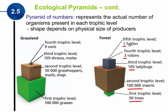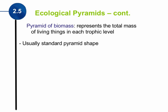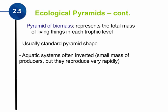The third type is a pyramid of biomass. A pyramid of biomass represents the actual total mass of things living at each trophic level. This is usually a standard pyramid shape, with the larger mass on the bottom and the smaller mass on the top. The exception is if we're looking at an aquatic system — in aquatic systems, the pyramid is actually flipped over, inverted. A really small mass of producers can actually support a really large mass of consumers.